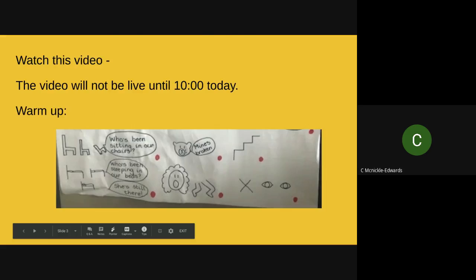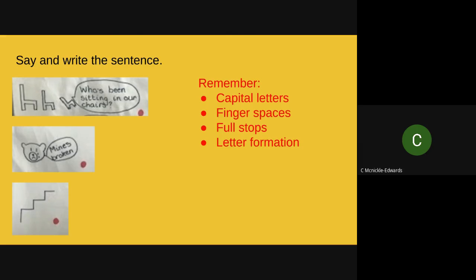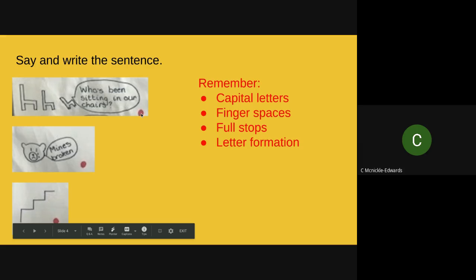Like the rest of the week, we're going to say the sentence — we've got the pictures there to help us — and then you're going to pause the video so you can write it down. Remember to make sure your sentences have capital letters, that there are finger spaces between each of the words, that there are full stops at the end of each sentence — you've got the prompts there to help you — and that your letters are nice and neat and formed correctly and sitting on the line. Okay, so first sentence at the end.